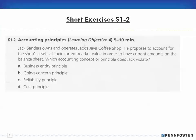The exercise says: Jack Sanders owns and operates Jack's Java coffee shop. He proposes to account for the shop's assets at their current market value in order to have current amounts on the balance sheet. Which operating concept or principle does Jack violate? The solution manual says the answer is D — the cost principle. If you picked the cost principle, fine. But if you picked one of the other ones, let's discuss why it would be the cost principle.